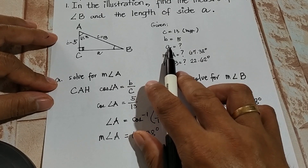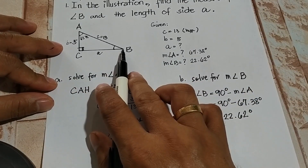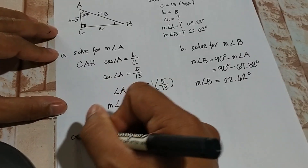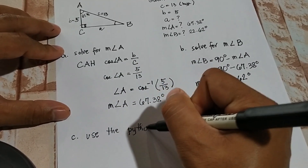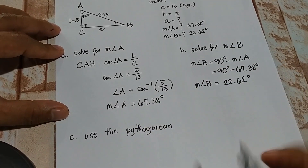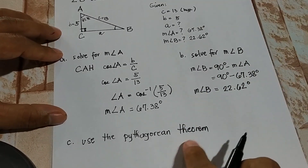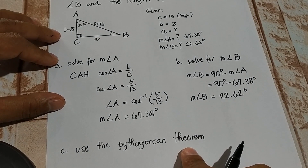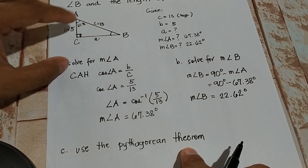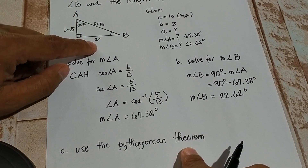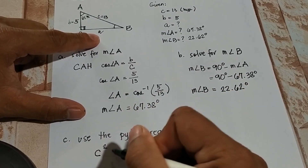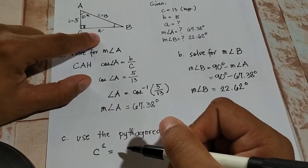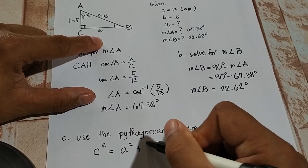The last thing to find is the length of side A. We'll use the Pythagorean theorem, which states that the square of the hypotenuse equals the sum of the squares of the two legs. Our hypotenuse is 13, side B is 5, and side A is unknown. So: C squared equals A squared plus B squared.